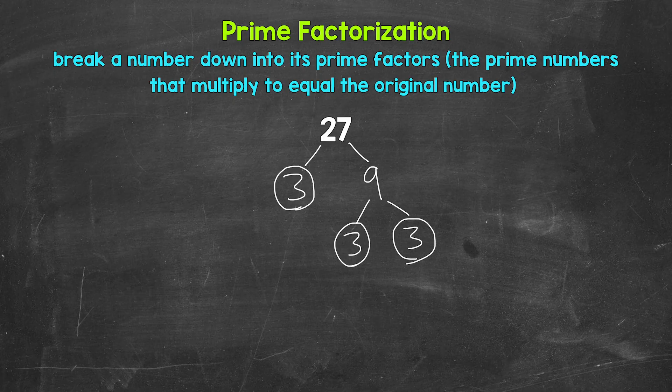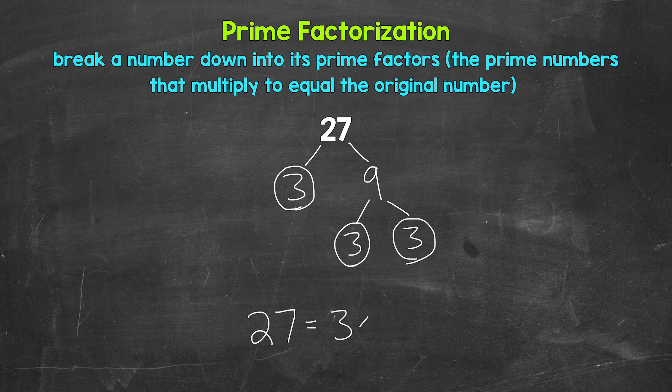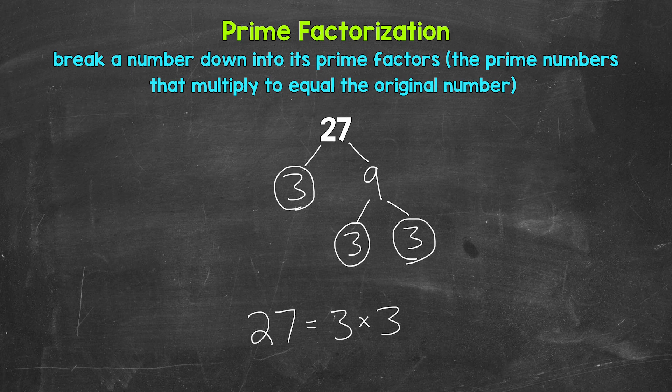We have all prime numbers. We can't break this down any further. So let's write this out as 27 equals, and then we're going to write our prime numbers here. So three times three times three.